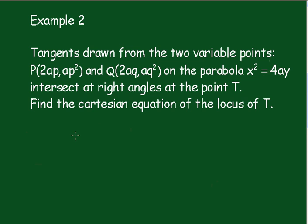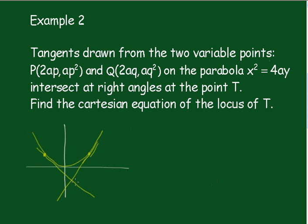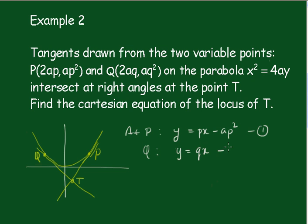I'll draw a little diagram to illustrate this. We have points P and Q on the parabola with T as their intersection. From Example 1, at P the tangent is y equals px minus ap squared, and at Q the tangent is y equals qx minus aq squared.